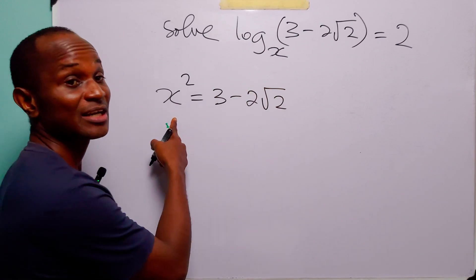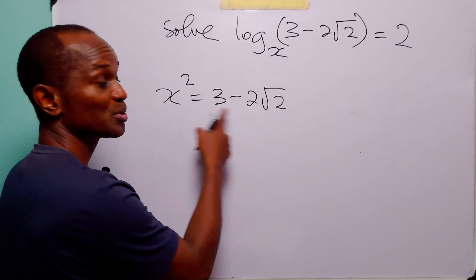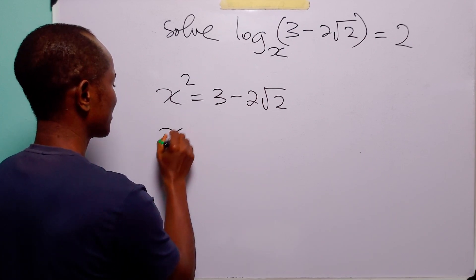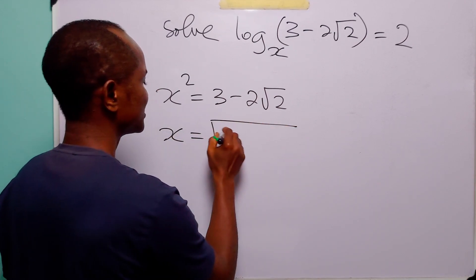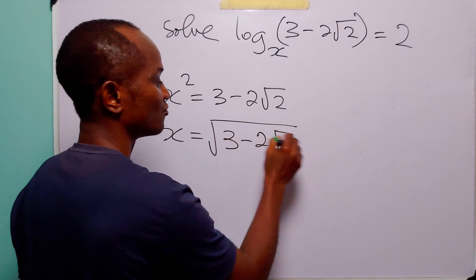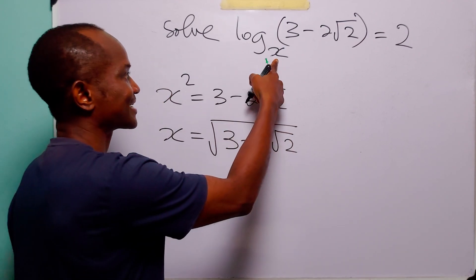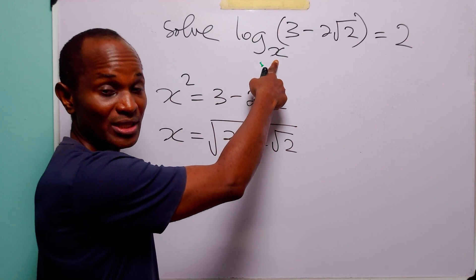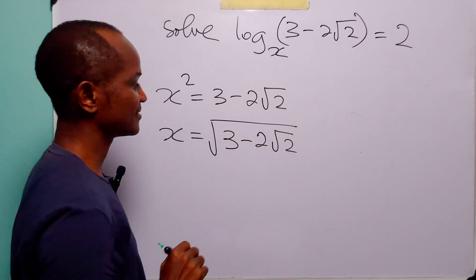To find the value of x we must take the square root of both sides of this equation. When we do that we have that x is equal to the positive square root of 3 minus 2 root 2. Positive square root because x is the base of a logarithm and hence must be greater than 0.